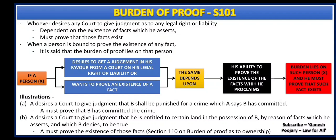In the first illustration: A desires a court to give judgment that B shall be punished for a crime which A says B has committed. Here A must prove that B has committed the crime. For example, A says that B has murdered Mr. C — now A has the liability to prove that B has committed that murder. He has to give evidence and prove the same. In the second illustration, A desires a court to give judgment that he is entitled to certain land in the possession of B, by reason of facts which he asserts and which B denies. Here A must prove the existence of those facts.